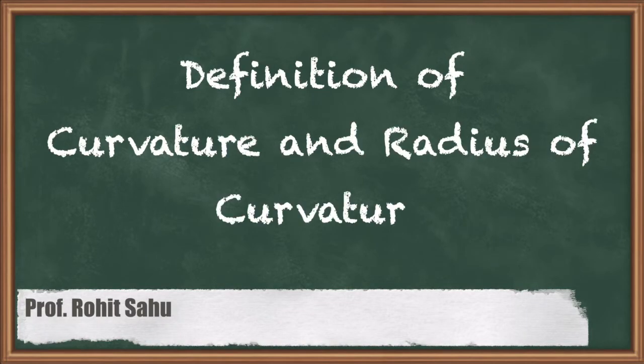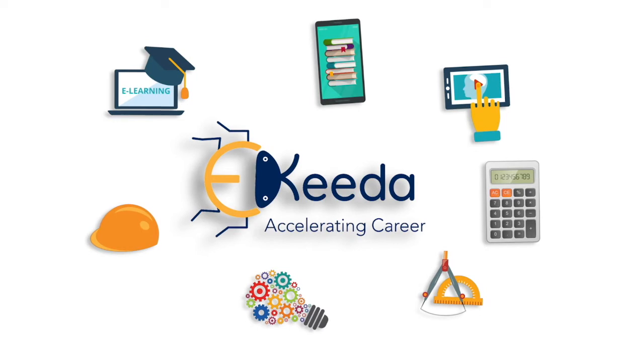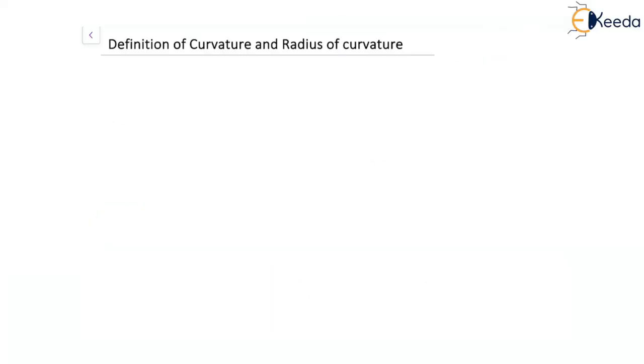Hello friends, in today's session we'll discuss curvature and radius of curvature. We have seen that curved paths have bendings. Basically, curvature of a curve at any point is a measure of the sharpness of bending.